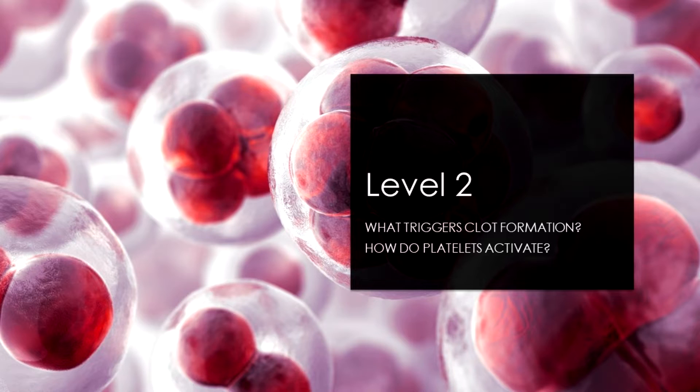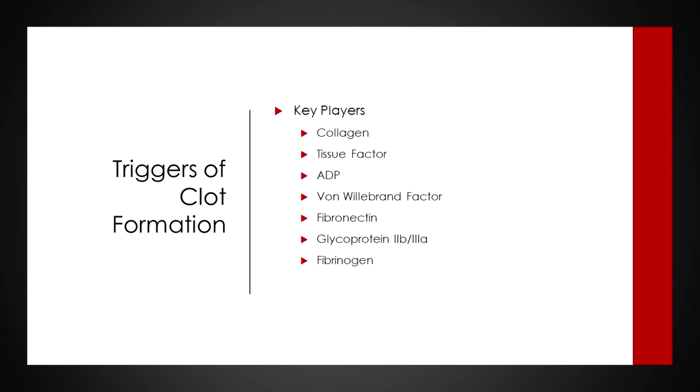Now that we understand the basics of hemostasis, let's look at level two: what is the trigger for clot formation, and how do platelets activate? Activation of platelets is an essential part of the hemostatic process. When we think about triggers of clot formation, the key players also have roles in diseases and medications — antiplatelet or anticoagulant therapies we'll discuss in a second talk on introduction to thrombosis treatment. The key triggers here are collagen and tissue factor.